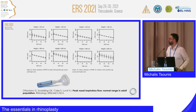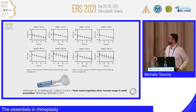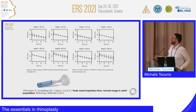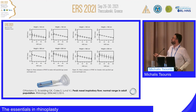Some useful reference tables are available: the left four columns refer to men, the right four to women. For example, a man aged 40 with a height of 180 cm should have an expected normal peak nasal inspiratory flow of around 170 liters per minute. A woman aged 20 with a height of 160 cm should have an expected normal score of around 150 liters per minute.